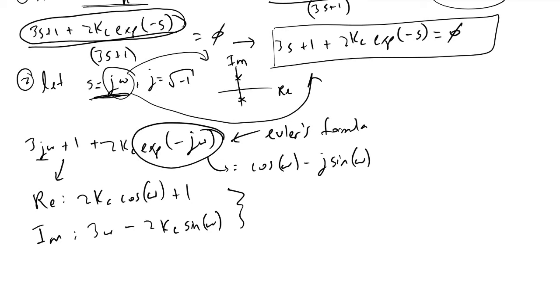These are the components of a complex number. To equal zero, both the real and imaginary part must equal zero simultaneously. So what that tells us is that we now have two equations with two unknowns.